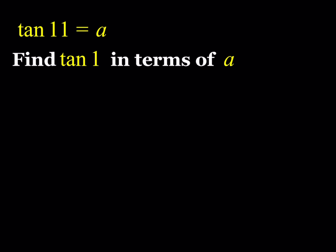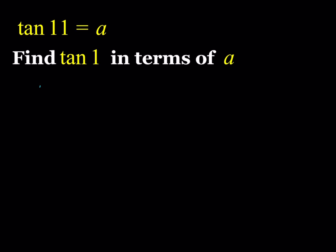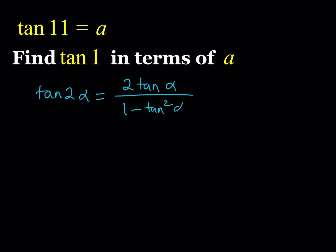Let's start with the formula. We know that tangent 2 alpha is equal to 2 times tangent alpha over 1 minus tangent squared alpha. If you're wondering where that formula comes from, you can look at the sum formula for tangent — tangent of alpha plus beta — and replace beta with alpha to get the double angle formula, which is very helpful.